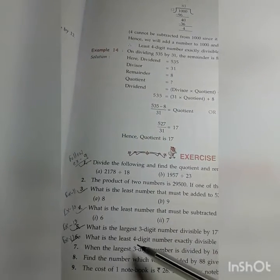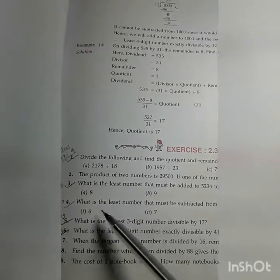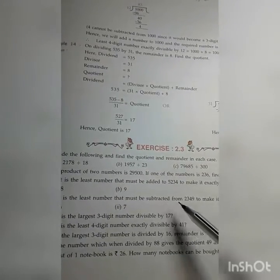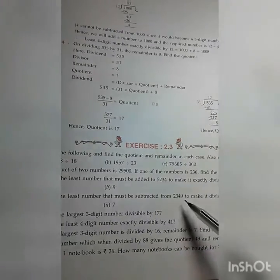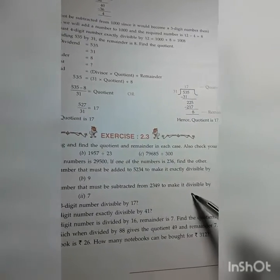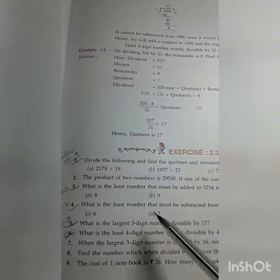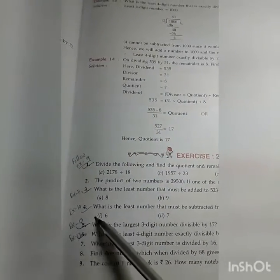This one also you follow example 11. What is the least number that must be subtracted from 2349 to make it divisible by 6 and 7. This one you follow example 10.